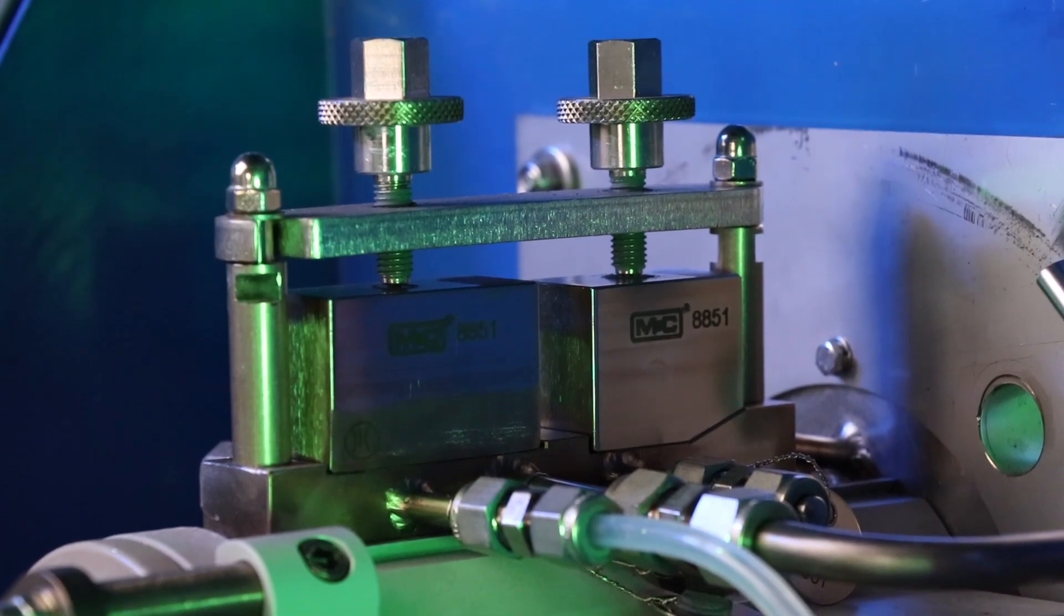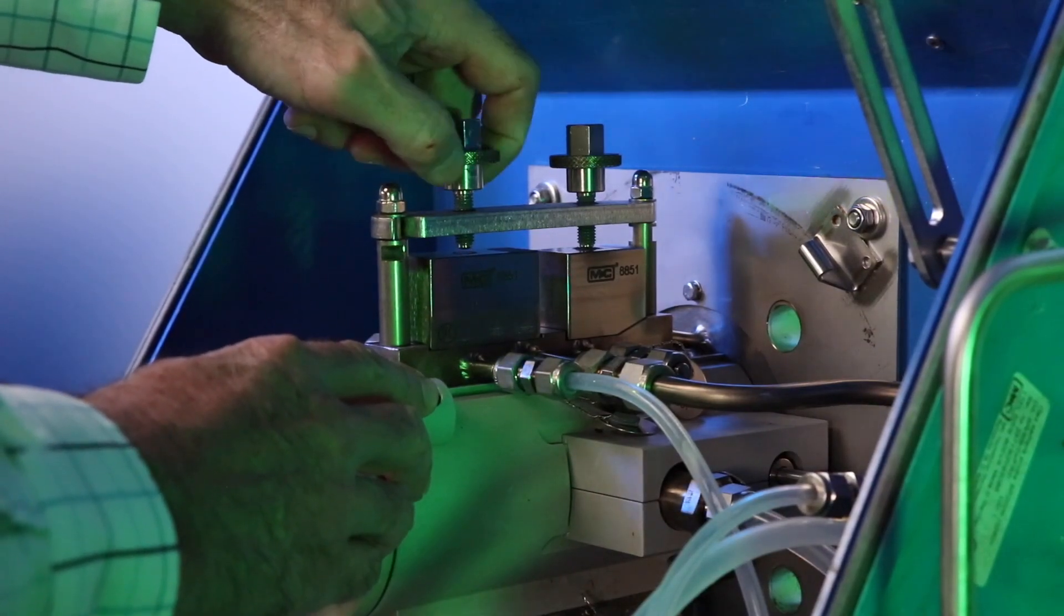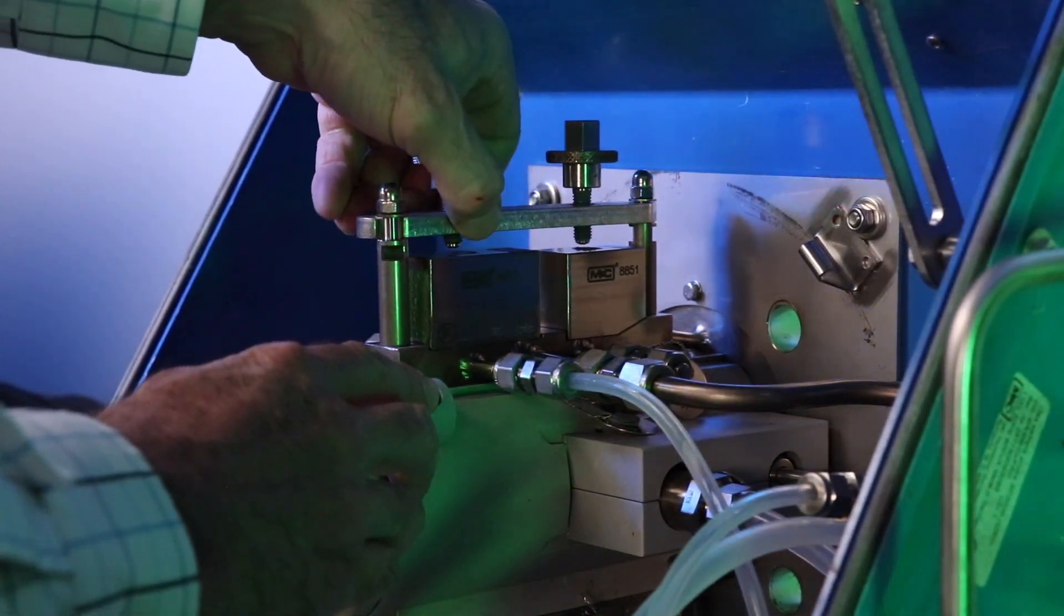Loosen the two knurl nut screws on the top of the clamp and swing the arm to the side. This will allow you to remove the dilution and bypass blocks.